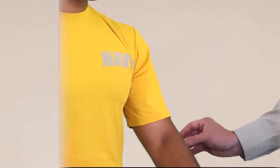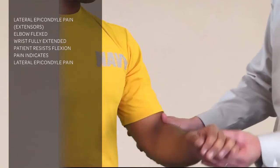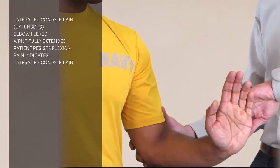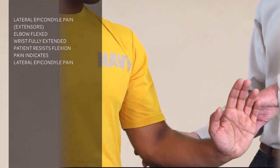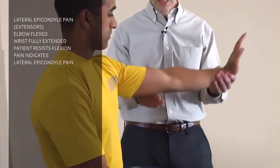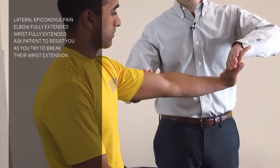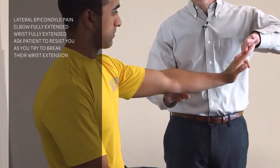With the elbow flexed and the wrist fully extended, you ask the patient to resist extension. If that causes pain, it's indicative of lateral epicondyle pain. You can further exacerbate that by having the patient fully extend their wrist, asking them to resist extension, and you can further isolate it by resisting on just two fingers.